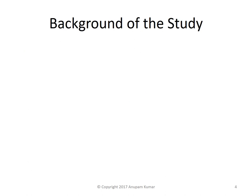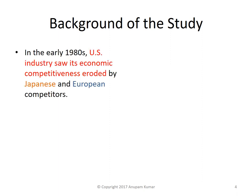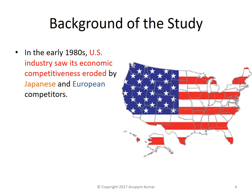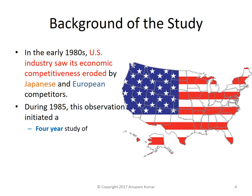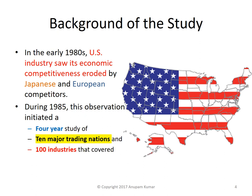Before we move on to the model, let us have a look at the background of the study. In the early 1980s, US industry saw its economic competitiveness eroded by Japanese and European competitors. During 1985, a 4-year study was initiated, where 10 major trading nations and 100 industries covering almost 50% of the total world's exports were studied. This study was led by Michael Porter.